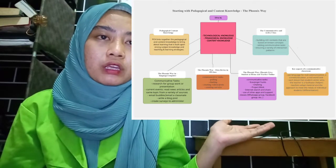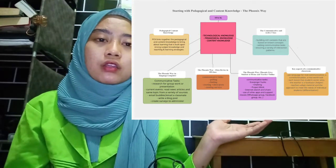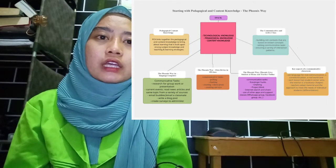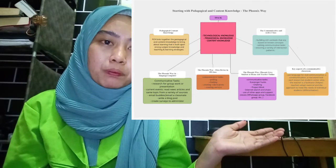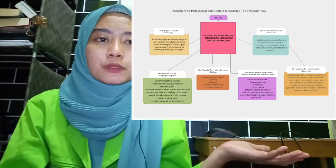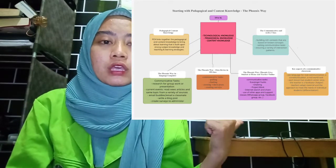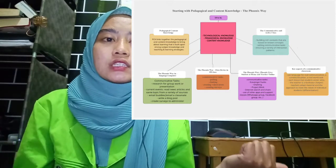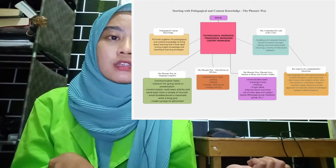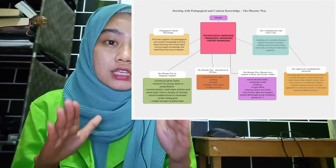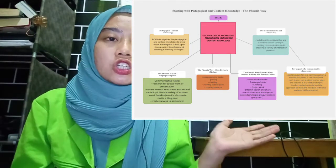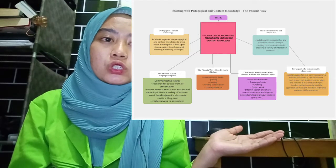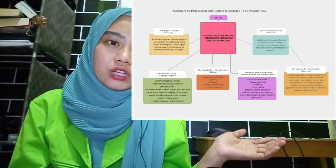In the blue color, you can see about the communicative and active class — that is about building rich context based on noun concept, then setting communication tasks, ensuring a variety of interaction patterns. The key aspects of a communication classroom are: using language for communication, context or situation, real tasks, and each lesson has student-centered aims. The teacher is a facilitator or helper, and the teacher adapts material and approach to meet the needs of individual students, or differentiation.